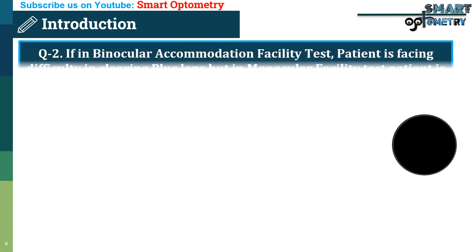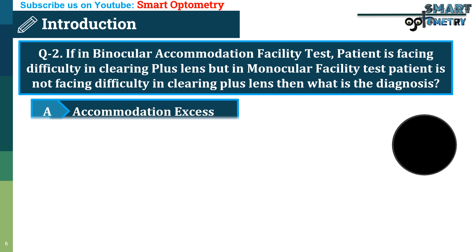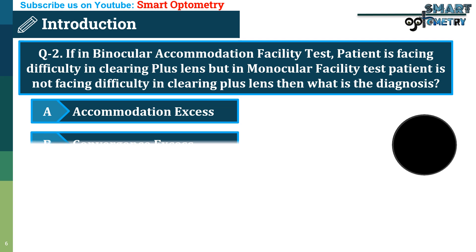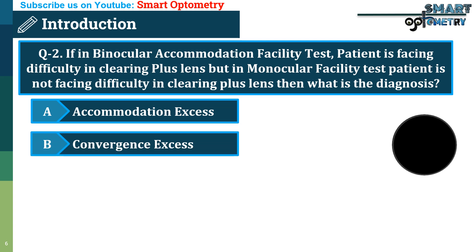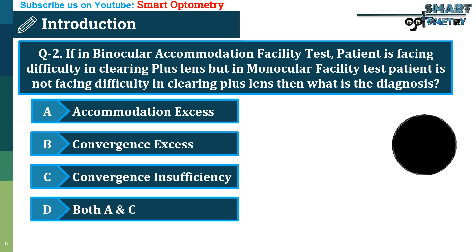Question 2. If in a binocular accommodation facility test the patient is facing difficulty clearing plus lens, but in a monocular facility test the patient is not facing difficulty clearing plus lens, then what is the diagnosis? A. Accommodation excess, B. Convergence excess, C. Convergence insufficiency, D. Both A and C.